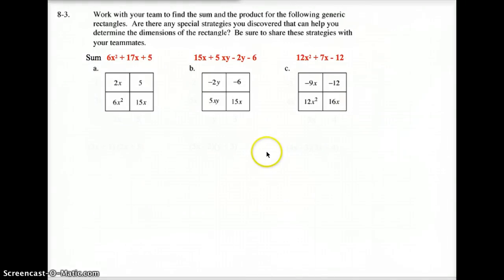Okay. But now we need to put together the product. Well, how do you find the product? Well, we've got to look at what do 2X and 5 have in common. Well, nothing. Well, they do have a 1 in common. What does 6X squared and 15X have in common? Well, they both have a 3 in common, and they both have an X in common. Looking in this direction, what does 2X and 6X squared have in common? They have a 2X in common.